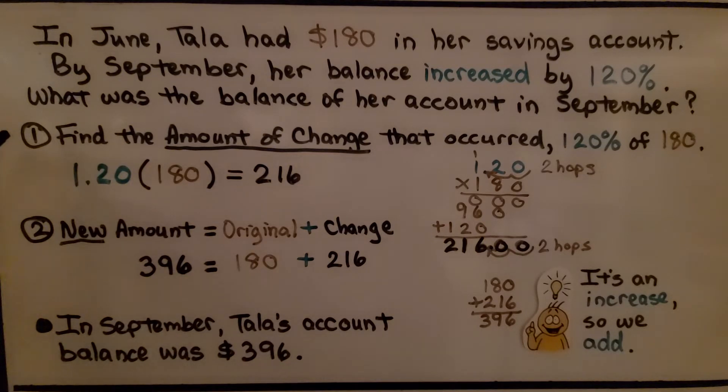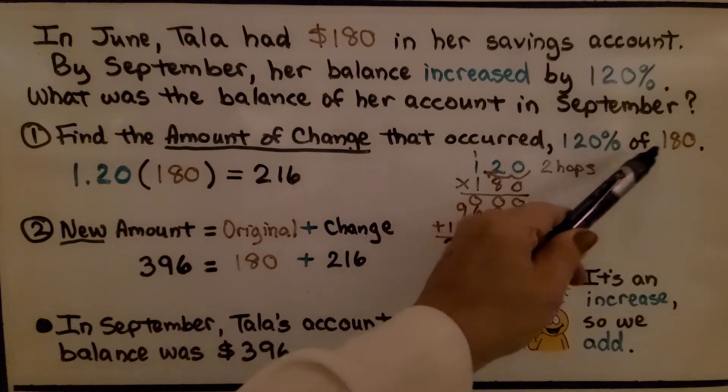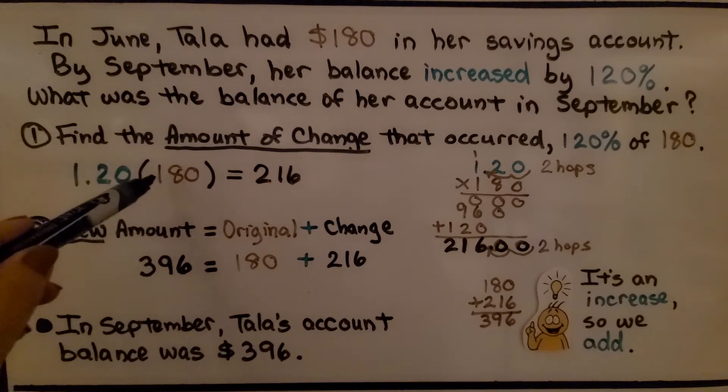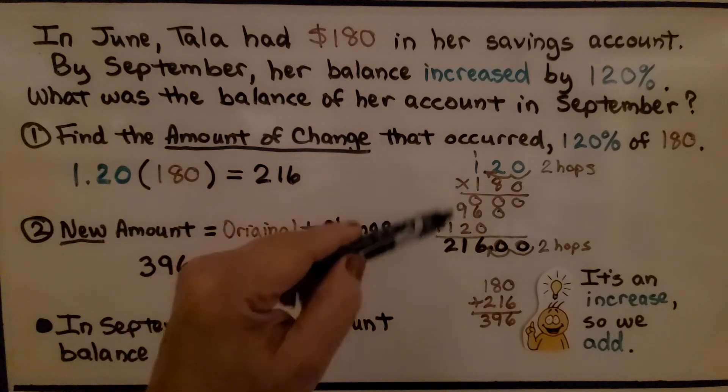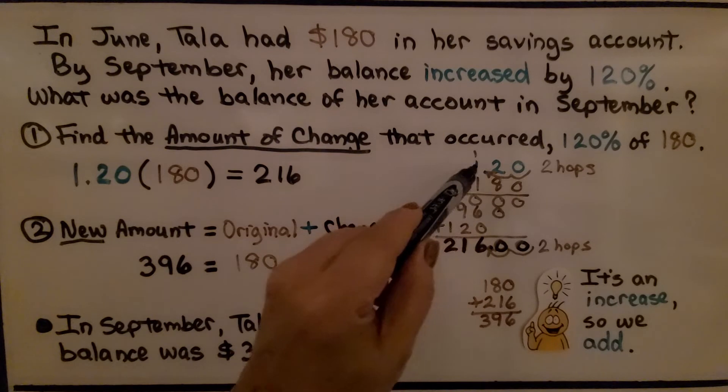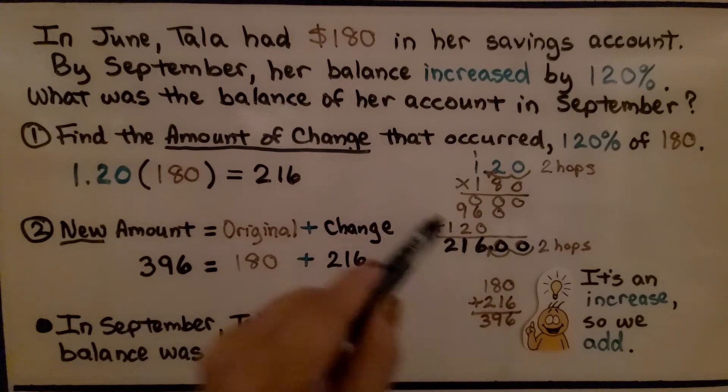First thing we do is find the amount of change that occurred. We're going to find 120% of 180. 120% of 180 is 1 and 20 hundredths as a decimal multiplied by 180. We can do a little multiplication on the side. We have a decimal point here, so there's 2 hops in the problem, so we're going to have 2 hops in the product. That gives us 216.